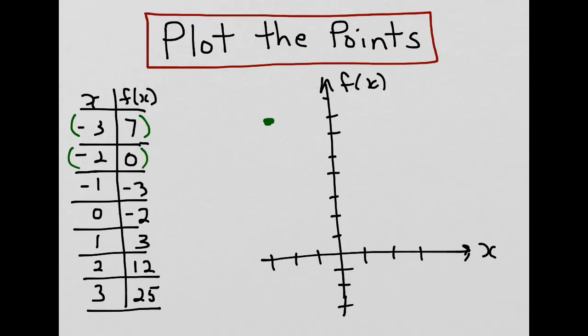And continue. Negative 2, 0. Negative 1, negative 3. Zero, negative 2. 1, 2, 1, 3. 2, 12. And 3, 25 would be up to the right here.